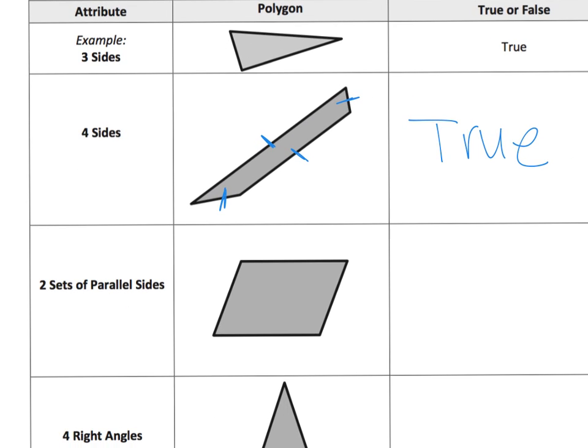One last one. Does this have two sets of parallel sides? So we're looking at this polygon and it's hard to tell but based on what it looks like, this line and this line really appear to be parallel with one another and this one and this one, these slanted ones, they look like they're parallel. So do we have two sets of parallel sides? Yes we do. So we're going to call that true.